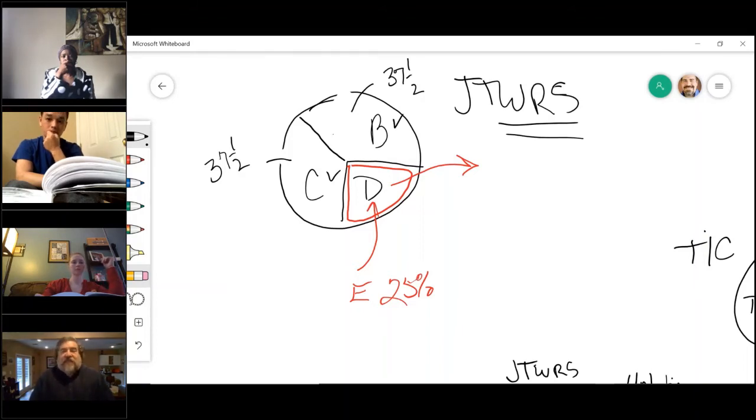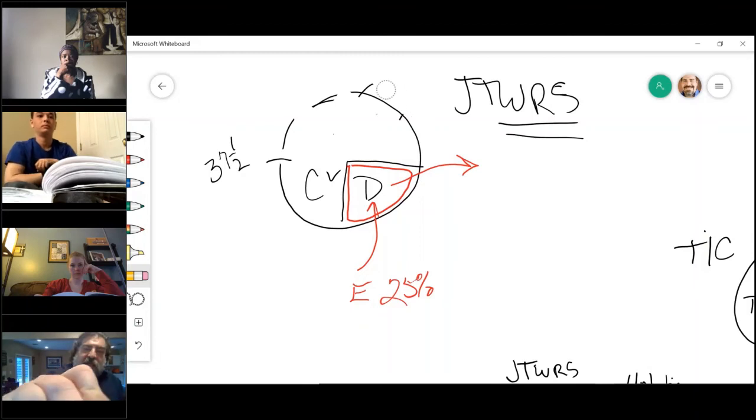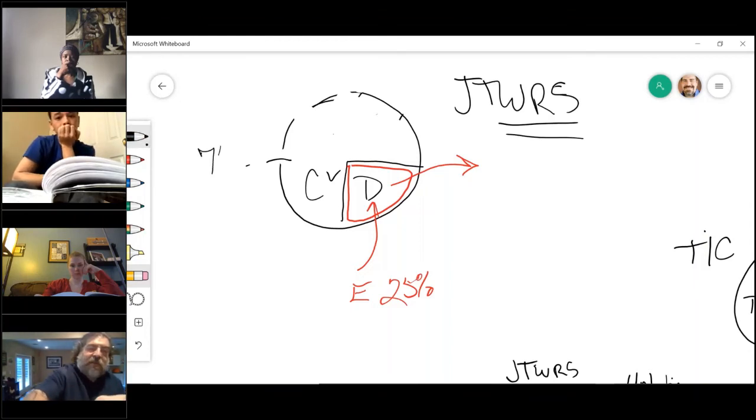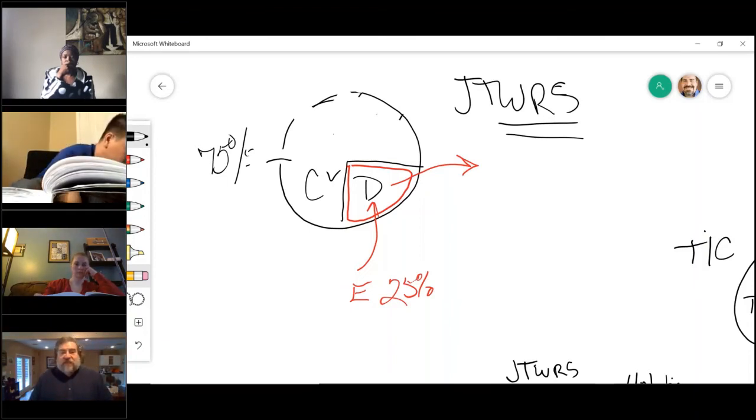So, when the one brother A, in my example, dies, his portion gets divided amongst the other joint tenants. E is not a joint tenant, so he doesn't get it. So, what you get now is B owns 37.5%, C owns 37.5%. That is 75%. While E is the other 25%. Notice E did not increase his percentage because he is not part of the original joint tenant group that is there.